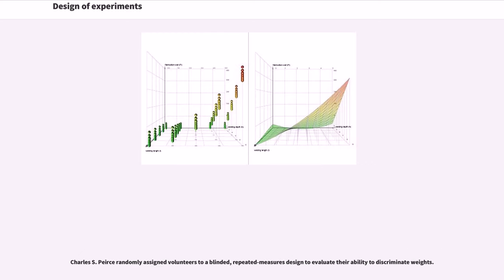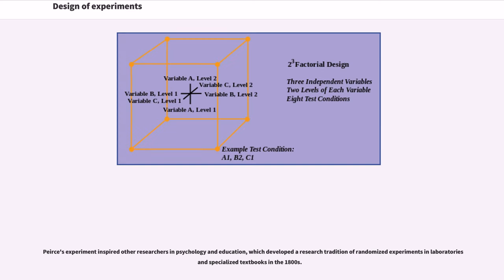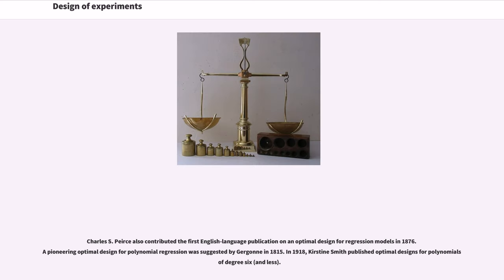Charles S. Peirce randomly assigned volunteers to a blinded, repeated measures designed to evaluate their ability to discriminate weights. Peirce's experiment inspired other researchers in psychology and education, which developed a research tradition of randomized experiments in laboratories and specialized textbooks in the 1800s. Charles S. Peirce also contributed the first English-language publication on an optimal design for regression models in 1876. A pioneering optimal design for polynomial regression was suggested by Gergonne in 1815.